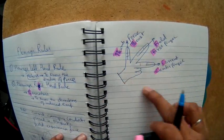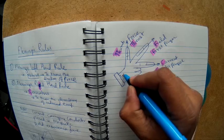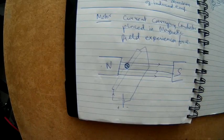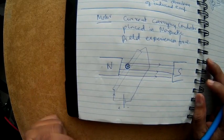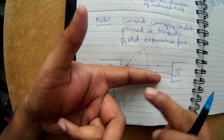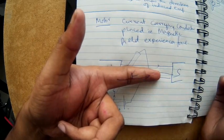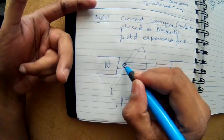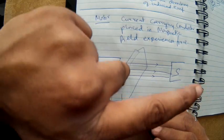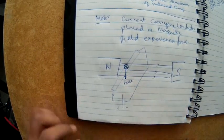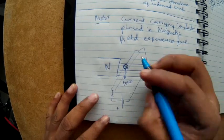Let's apply the left hand rule. First, point the first finger in the direction of the field — left to right. Then orient the middle finger in the direction of the current, which is going into the page. With the field and current set correctly, the thumb ends up pointing downwards, so the force on the conductor is directed downwards.